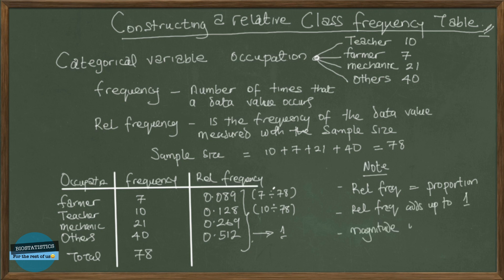And this relative frequency just tells us the magnitude of each of the data values and is measured with the sample size in mind. So it's the frequency of the data value measured with the sample size in mind. This is the simple way of constructing a relative class frequency table. Thank you very much for watching. Catch you guys in the next video. Bye.